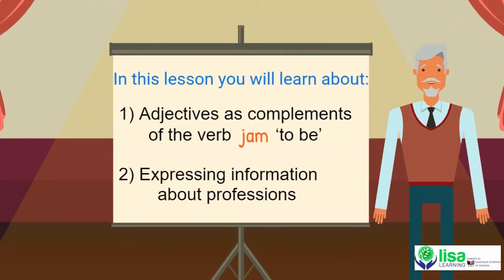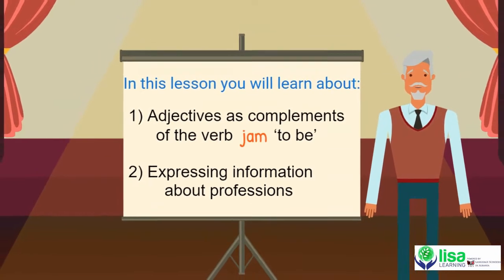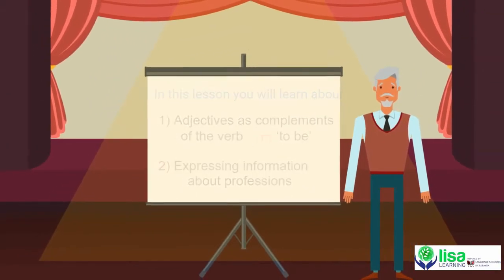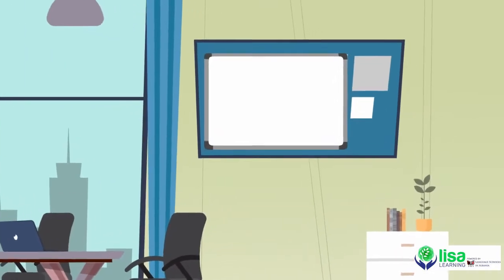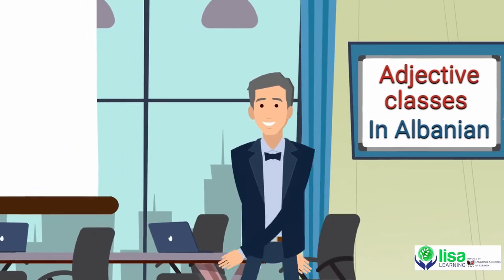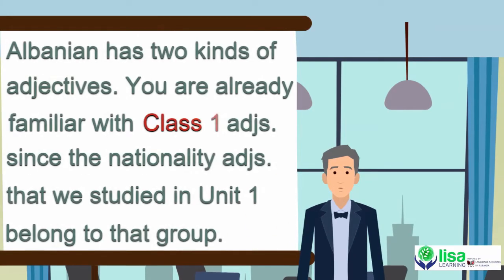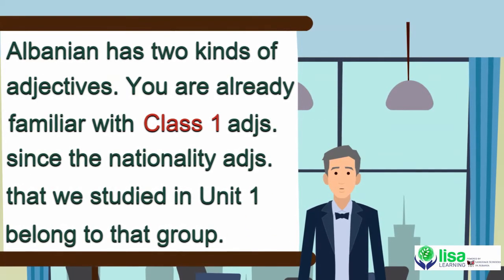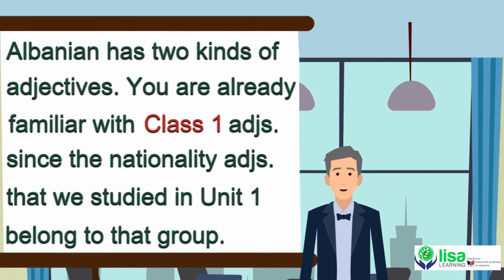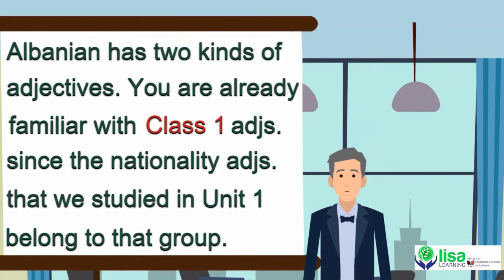In this lesson you will learn about adjectives as complements of the verb to be, expressing information about professions. Albanian has two kinds of adjectives. You are already familiar with Class 1 adjectives, since the nationality adjectives studied in Unit 1 belong to that group.